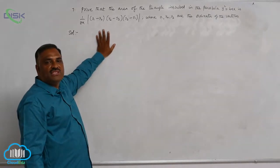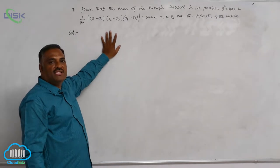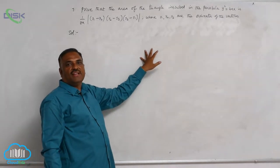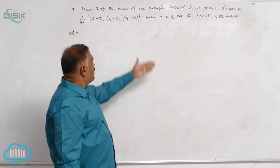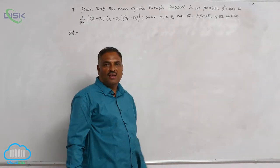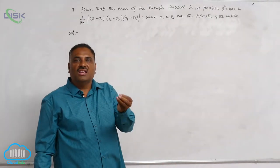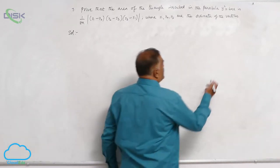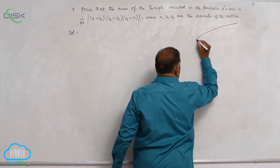y₁ minus y₂ into y₂ minus y₃ into y₃ minus y₁ square units where y₁, y₂, y₃ are the ordinates of the given vertices.